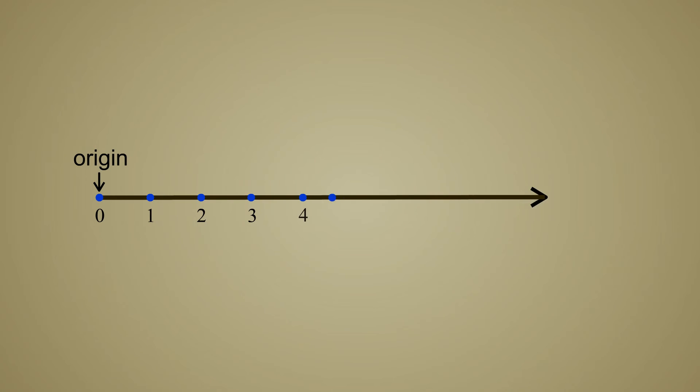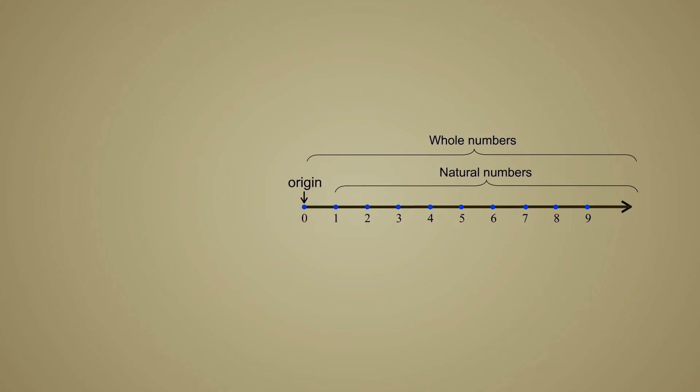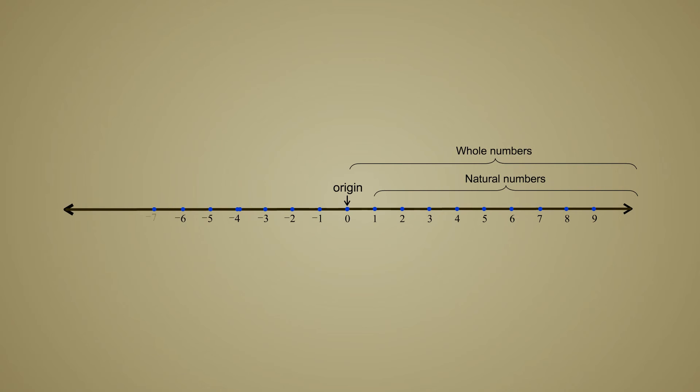Integers can be represented on a number line just like natural numbers and whole numbers. But now the number line must go off to infinity in both directions.